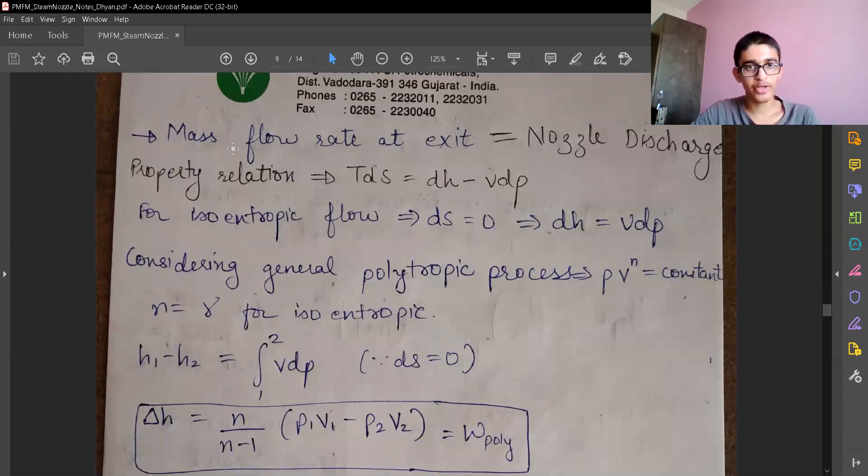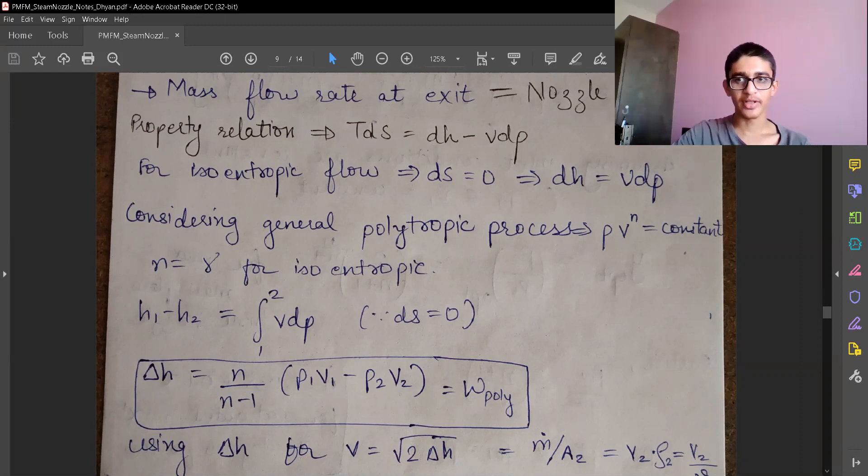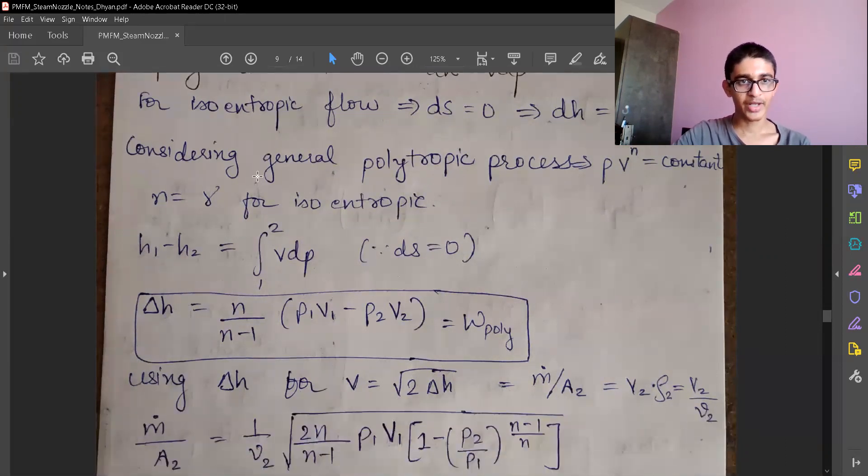So we can find the mass flow rate at exit—that is called nozzle discharge—and we have a property relation that is Tds equals dH minus VdP. So let's assume a polytropic process. First we'll assume isentropic process, that's why dH is zero, so dH equals VdP, and then we'll assume a polytropic process for more generalized condition.